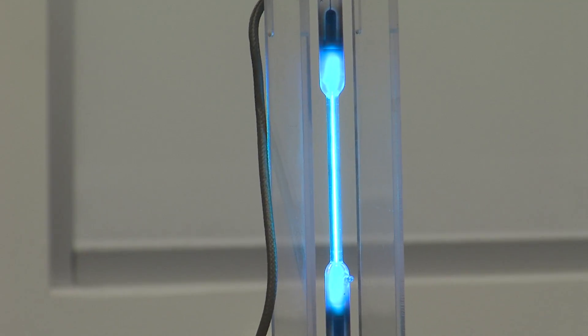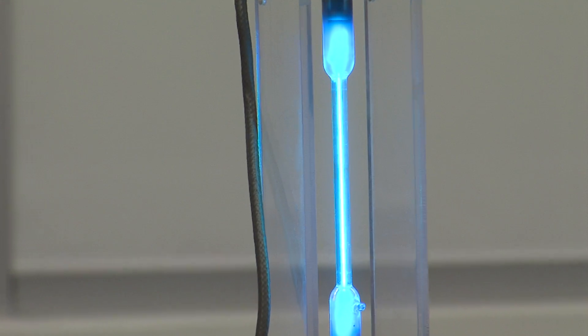As you can see, mercury lamps glow bright blue. This lovely blue color is actually a combination of purple, green, and yellow.